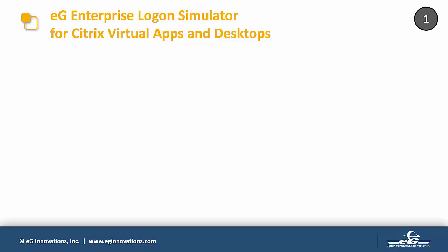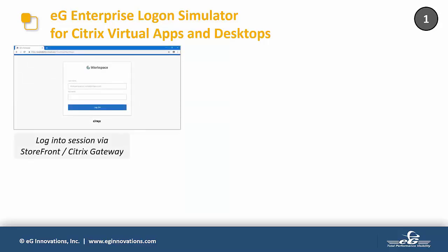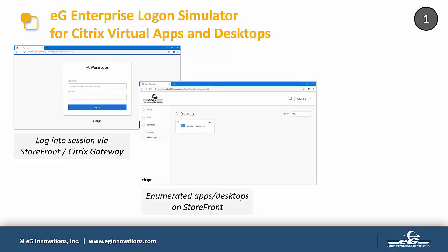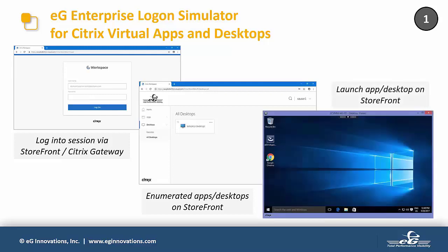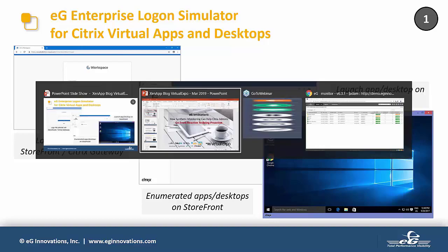The logon simulator is a software robot programmed to simulate Citrix logons. There are three main steps it performs: it opens the browser, automatically enters the NetScaler and StoreFront URL, waits for the page to load, then enters the username and password and logs in. Once the logon succeeds, it checks that the application or desktop of interest can be enumerated, clicks on it, launches it, makes sure the launch succeeds, and finally logs off. This simulator can be scheduled to run at any frequency and from one or multiple locations, and you can configure it to check multiple Citrix sites.